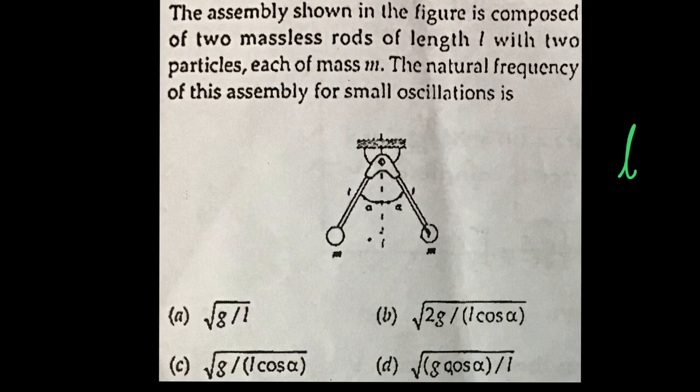But we have two particle masses or we have two particles of mass little m each as shown over here. And see this whole system is pivoted about this particular point over here and then the angle between the two rods are given as 2 alpha as shown over here. So we are asked to compute the natural frequency for small oscillations.